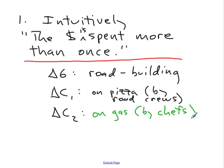More gasoline is produced and sold. And all of this will add up. The total change in output is the increase in road construction plus the new pizza plus the new gasoline and on and on.